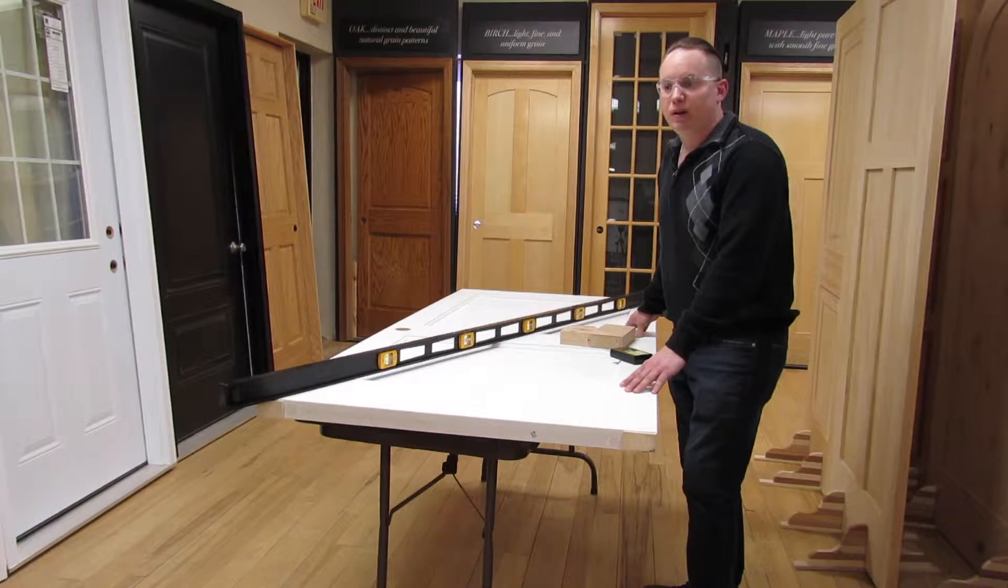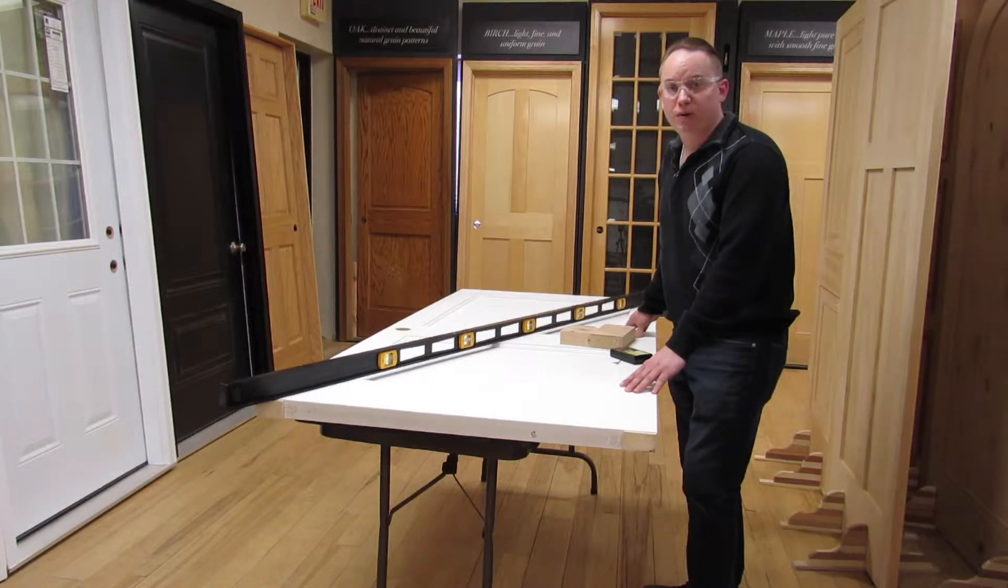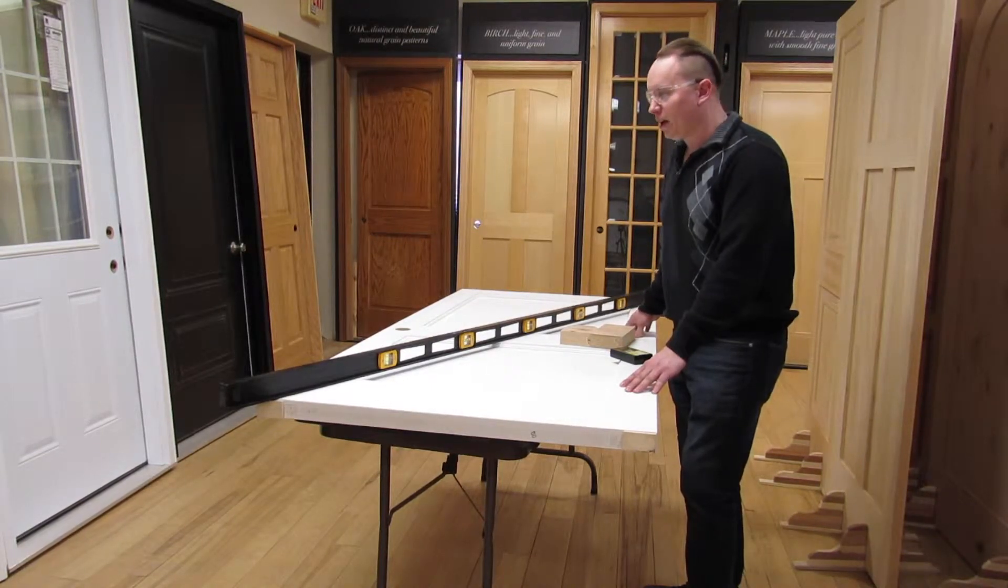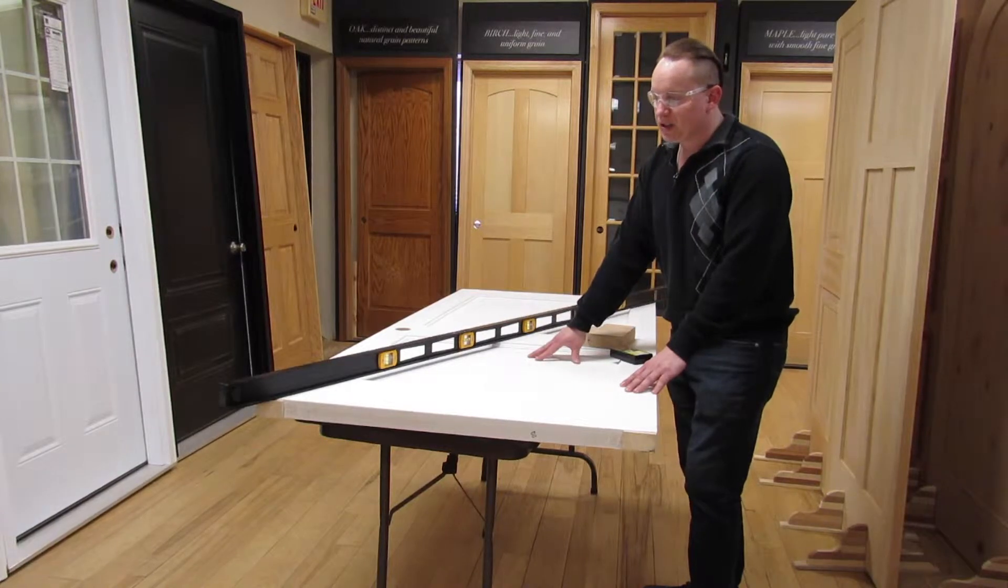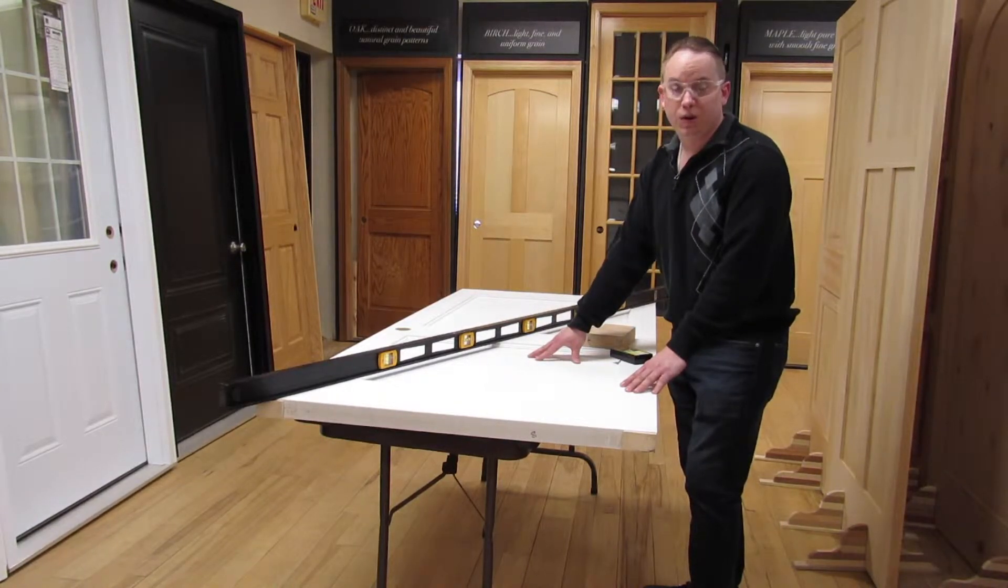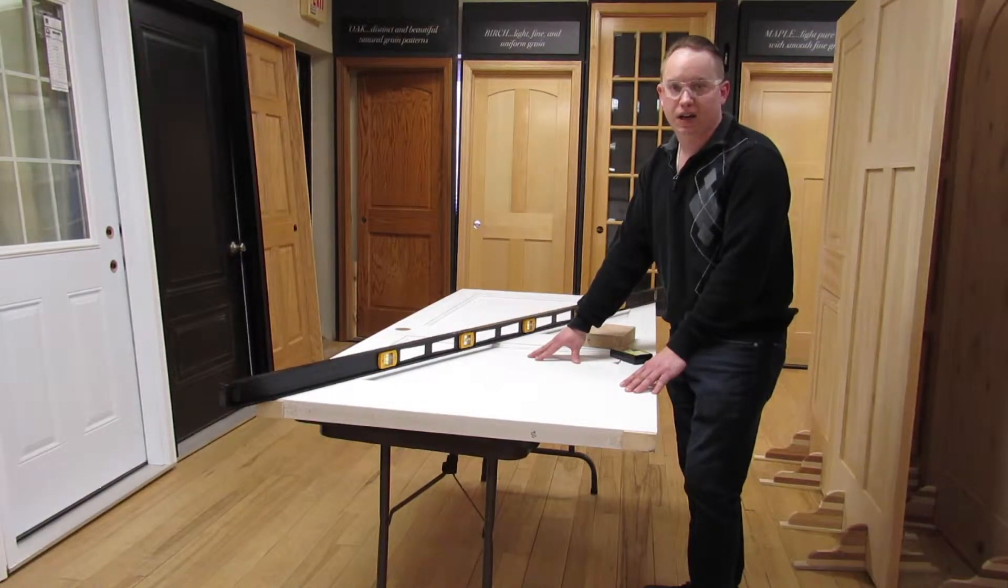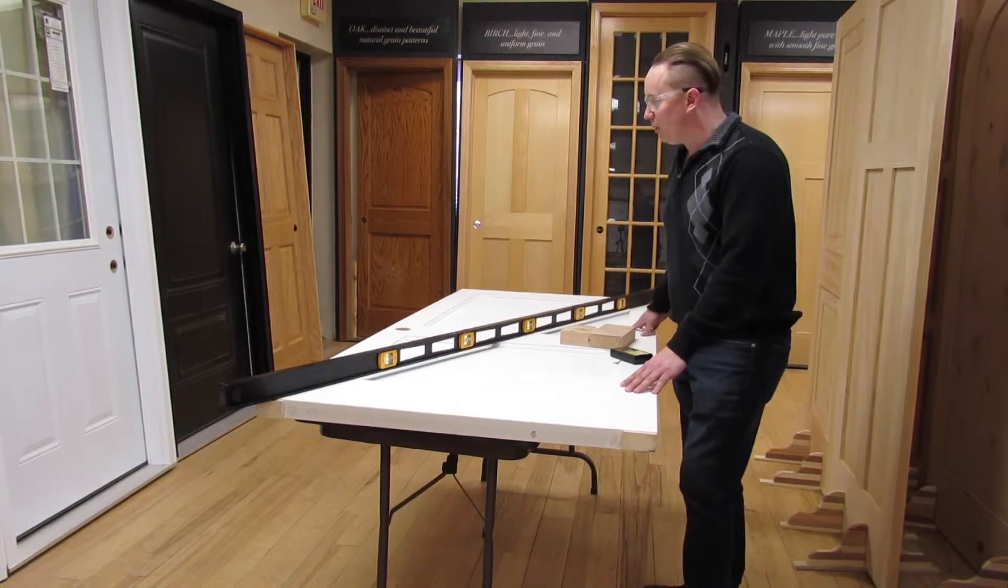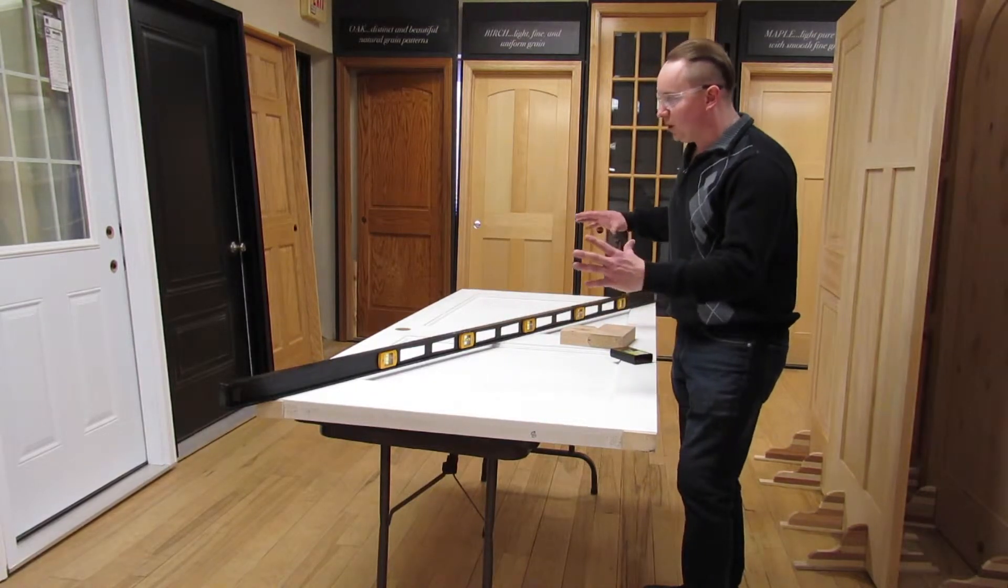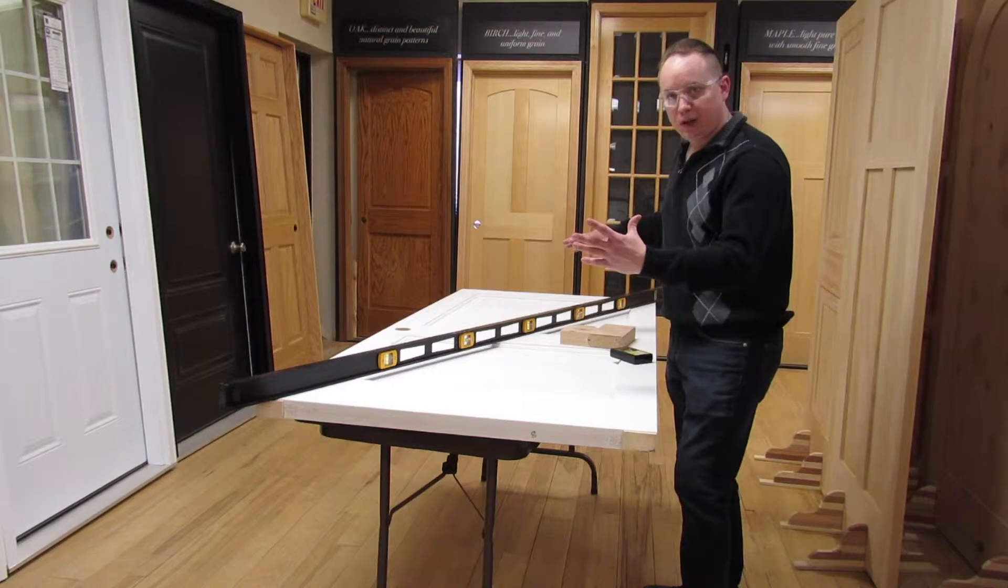This will deter any twist or bow or warp. Now this door here was shocked to a cold environment, drying out, sucking up all the moisture inside. By allowing that to happen, the door started to twist and turn a little bit.